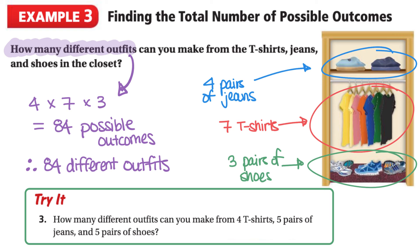Now let's take a look at our third try question. We can use the quick method to answer this: how many different outfits can you make from four t-shirts, five pairs of jeans, and five pairs of shoes?